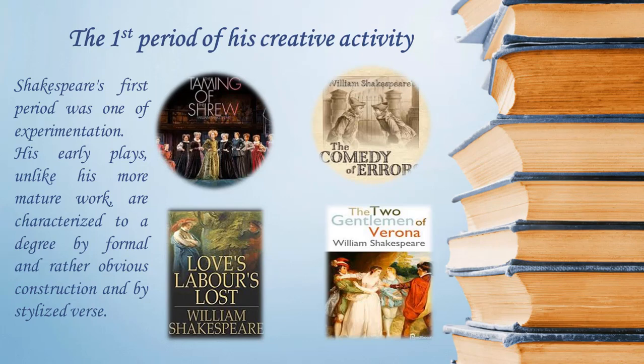Shakespeare's comedies of the first period represent a wide range. The Comedy of Errors, a farce in imitation of classical Roman comedy, depends for its appeal on mistaken identities involving two sets of twins in romance and war. Farce is not as strongly emphasized in The Taming of the Shrew, a comedy of character. The Two Gentlemen of Verona concerns romantic love. Love's Labour's Lost satirizes the loves of its main male characters and their fashionable devotion to studious pursuits.